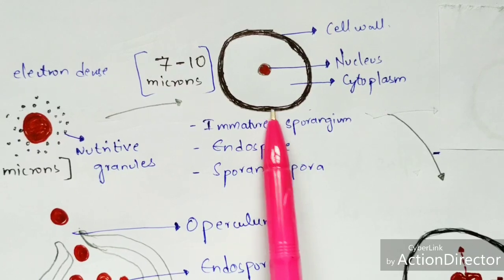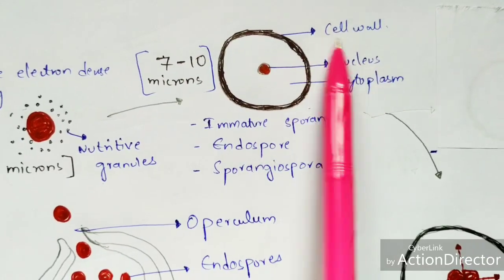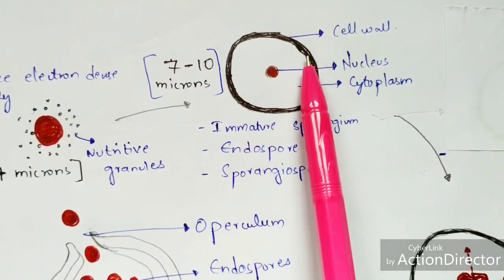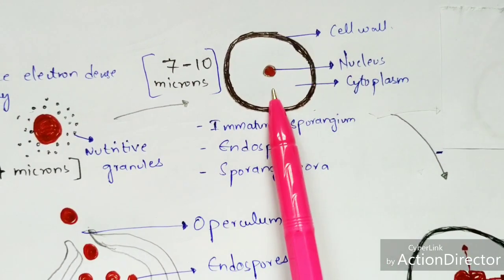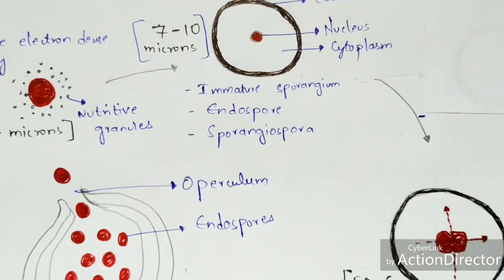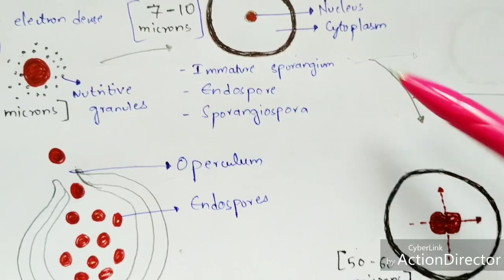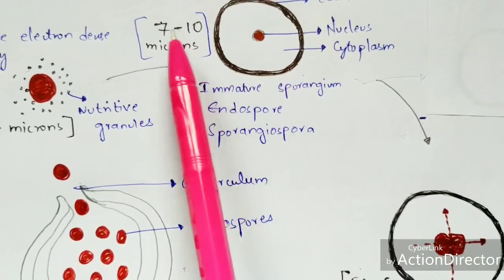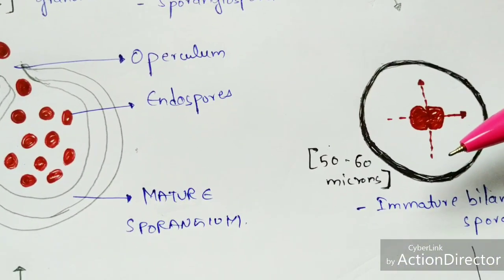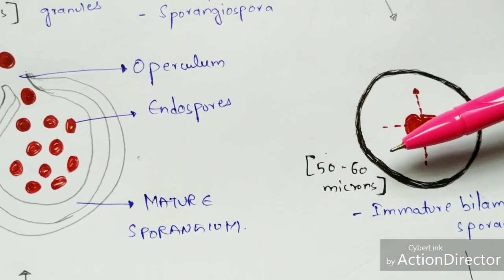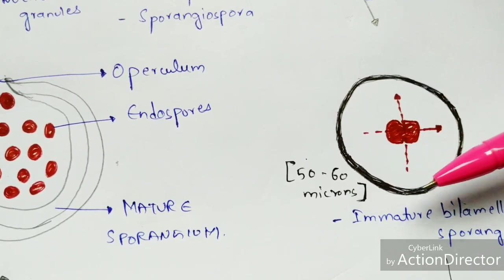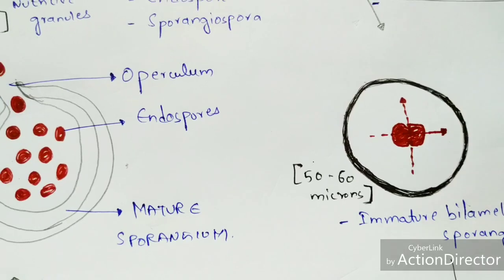The life cycle begins with the immature sporangium, also called an endospore or sporangiospora. It consists of a chitinous cell wall with a nucleus and cytoplasm. The size of the immature sporangium ranges from 7 to 10 microns. In the next stage, the size increases to 50 to 60 microns — this is called immature bilamellar sporangia.